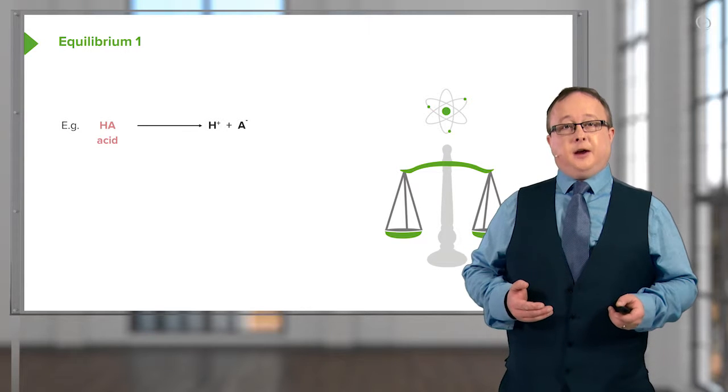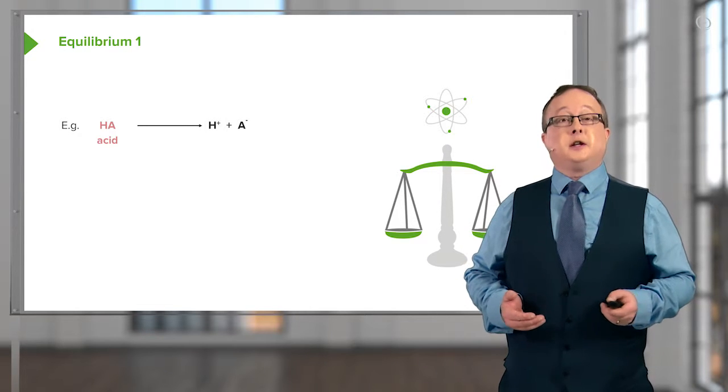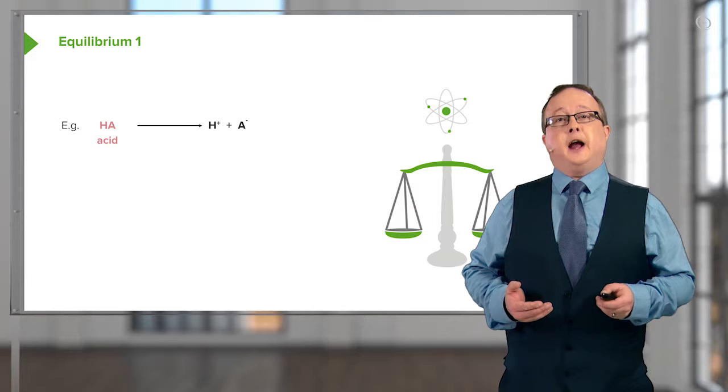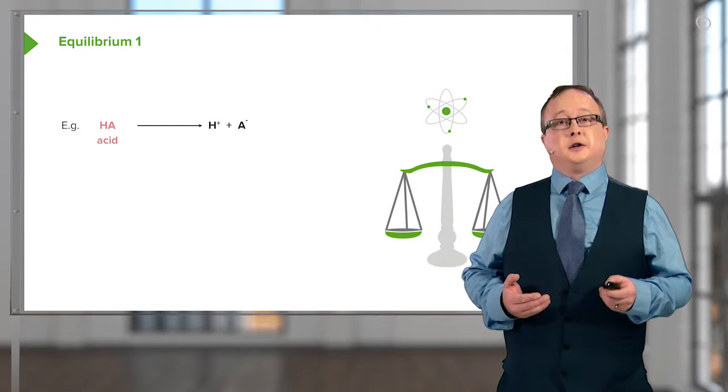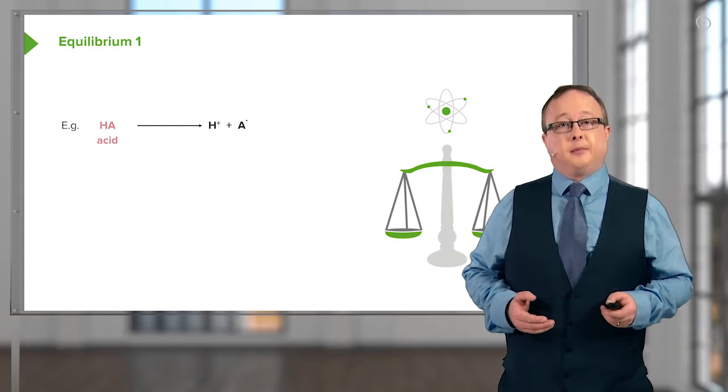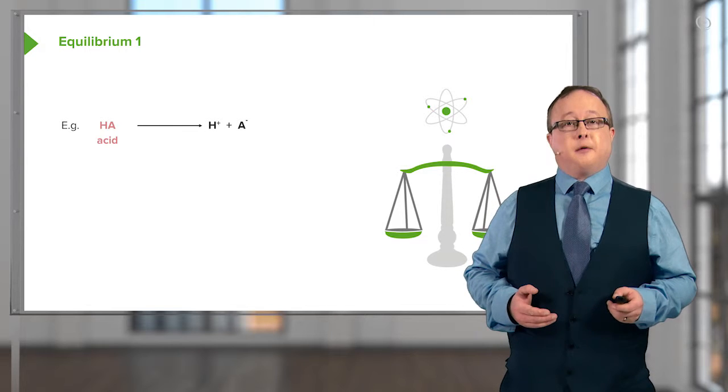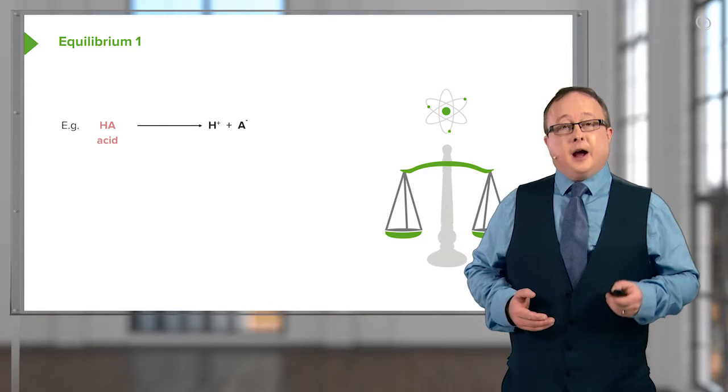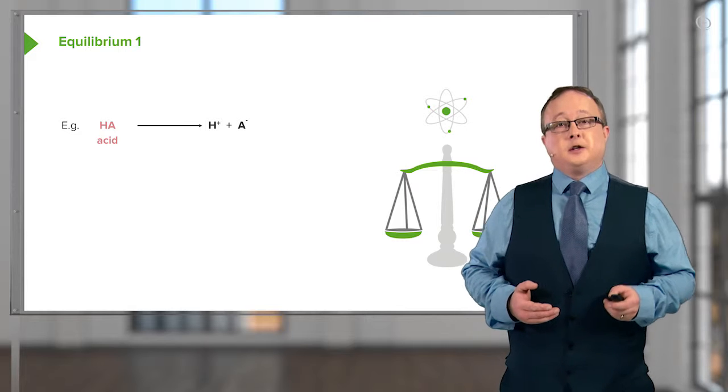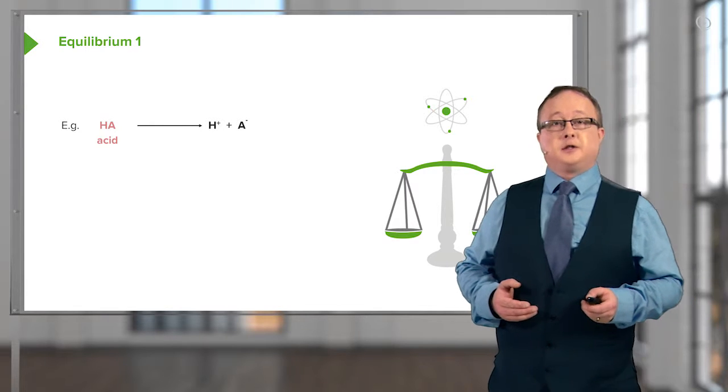So, for example, if we look at some very strong bases, it's naturally assumed that virtually every single part of that compound is converted into H-plus and its conjugate base. And that is shown here in the first equation. HA, which is our model acid, disproportionates into H-plus and A-minus.